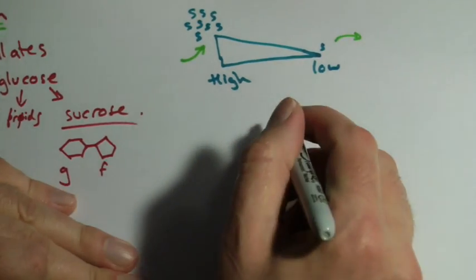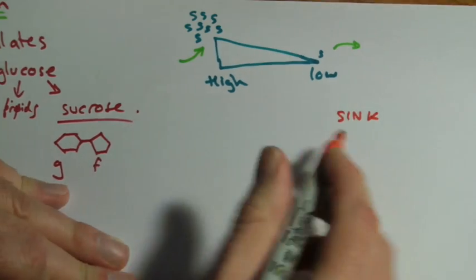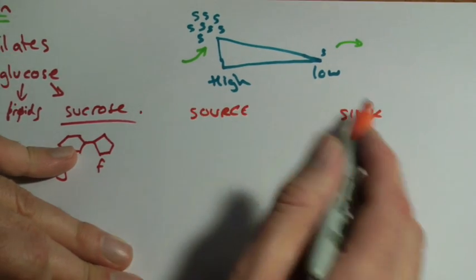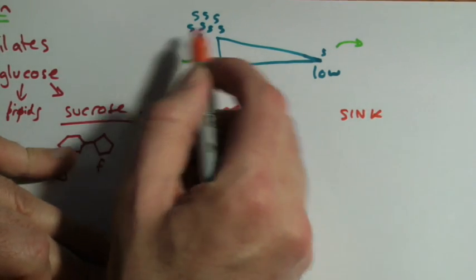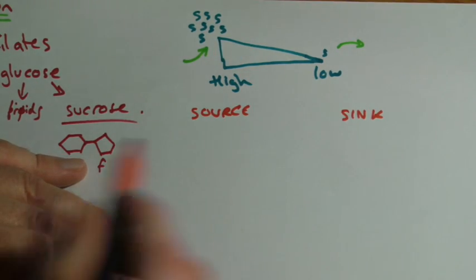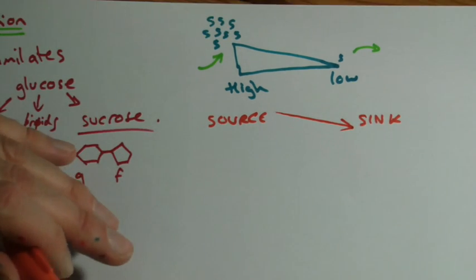We tend to talk of it in terms of sinks and sources. The sink is where it's going to get used up at the lower concentration. The source is going to be where we're creating or releasing our sucrose in this case, and it's going to go down that concentration gradient.